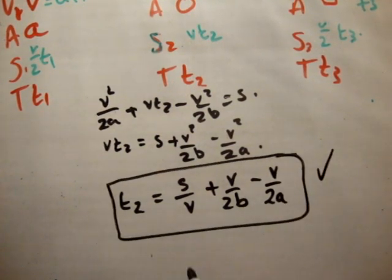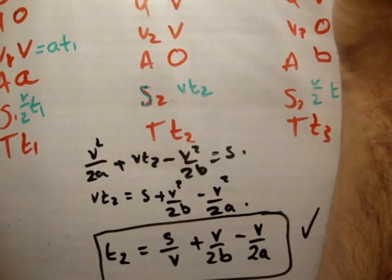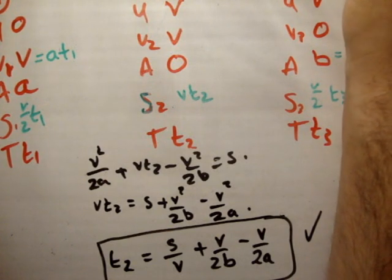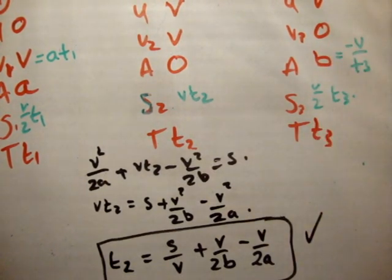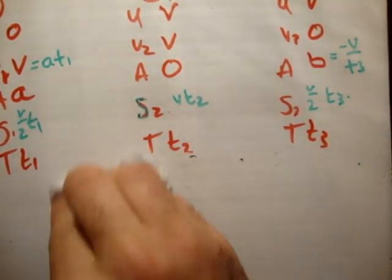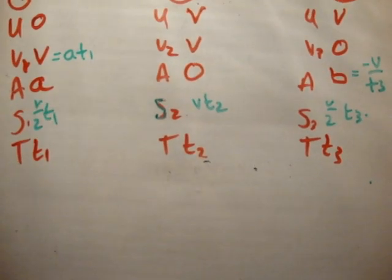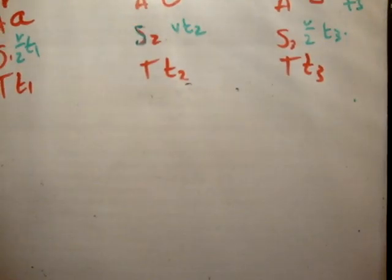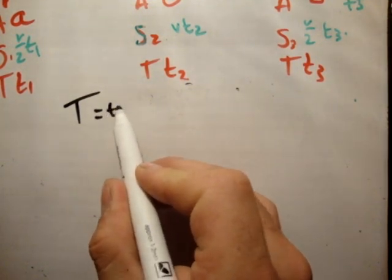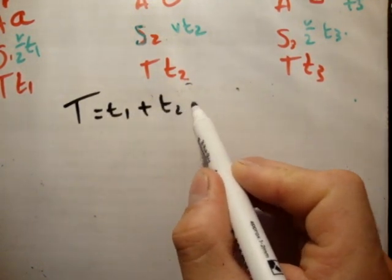Alright. So, now we have an expression for t2, an expression for t1, and an expression for t3. So, I'll just note that up here in the corner. You don't necessarily need to see that. You can write that in your copy if you like. Alright. So, what are we told? We're told that we want to get an expression for the total time. So, let's do that.